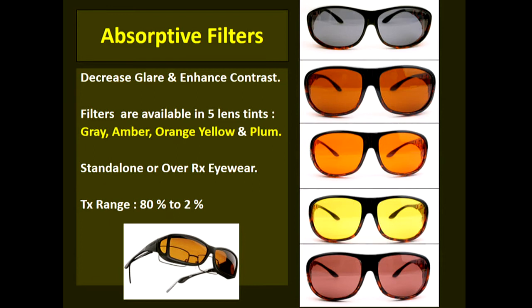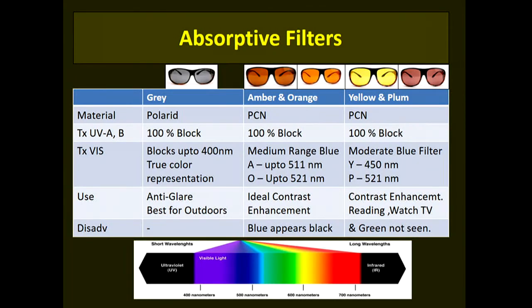Absorptive filters are also available in various shades: gray, amber, orange, yellow, and plum. The gray and plum filters reduce the overall transmission of light, making them ideal for cutting down glare. The amber, orange, and yellow filters also cut down blue light transmission, making them ideal for contrast enhancement.